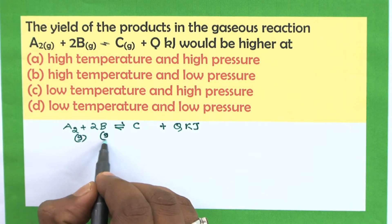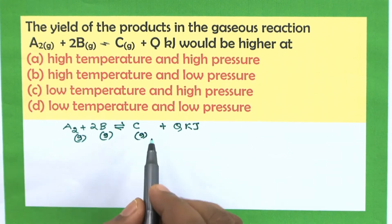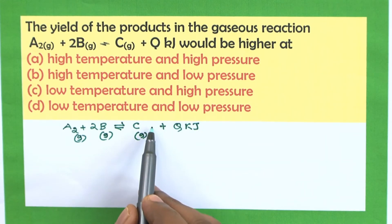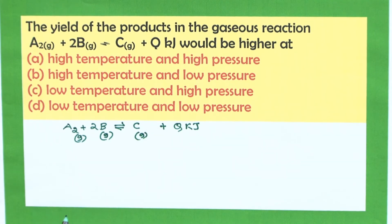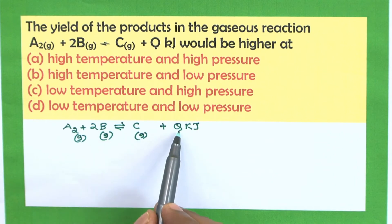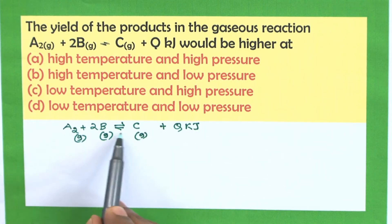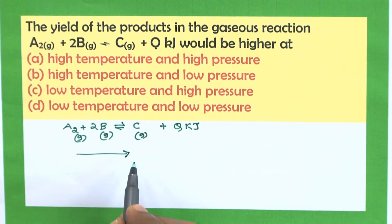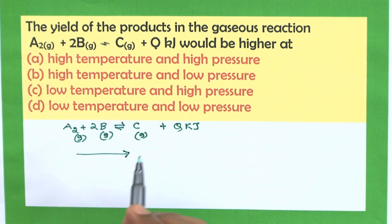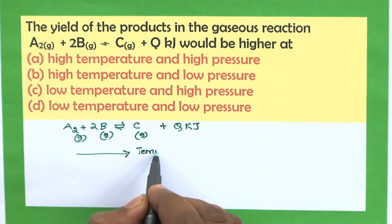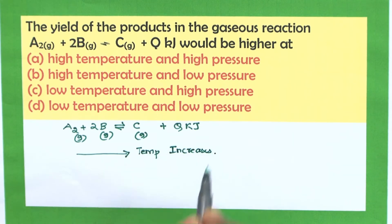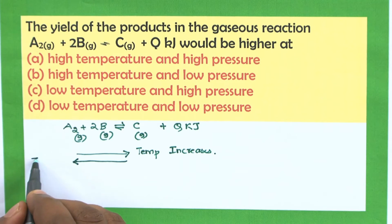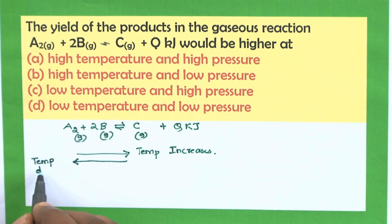A₂ is a gas, B is a gas, C is also a gas. They have written '+q kilojoules' on the product side instead of delta H, meaning energy is released during the reaction — so the forward reaction is exothermic. If forward reaction is exothermic, energy is released and the temperature of the system increases. Therefore the backward reaction is endothermic — energy is absorbed and temperature decreases.